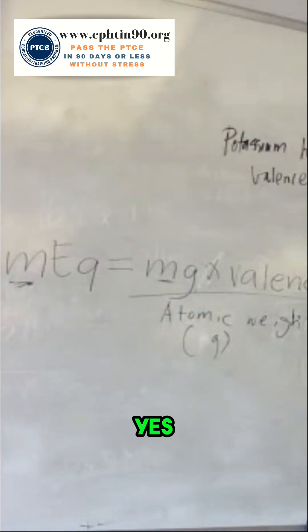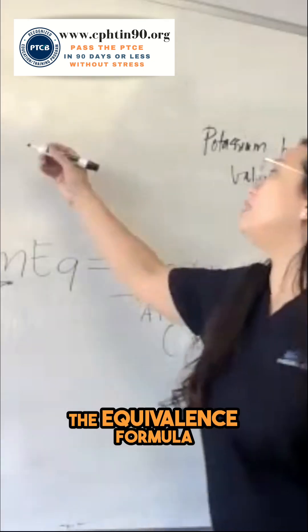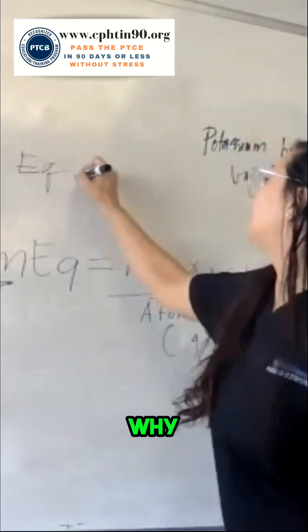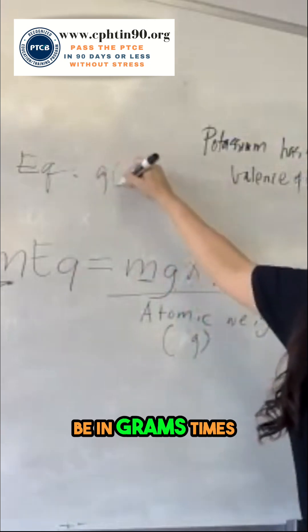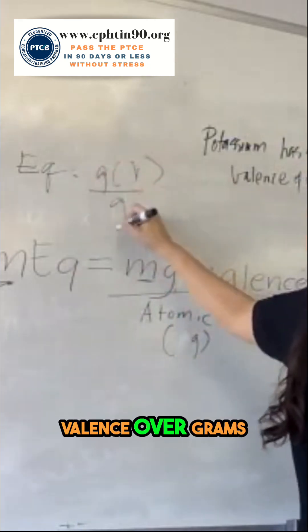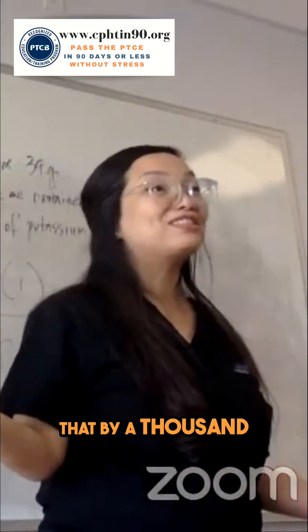You get it? Yes, what makes sense is the equivalence formula: the equivalence formula will be in grams times valence over grams. But if you want the milliequivalent answer, then you have to multiply that by a thousand.